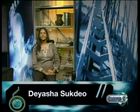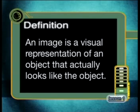Hi there, welcome to this series on light and lenses. As you might have guessed from some of the comments you've just seen, this series is all about images. But what is an image, scientifically speaking? An image is a visual representation of an object that actually looks like the object. In other words, you must be able to describe the features of the object when looking at the image.